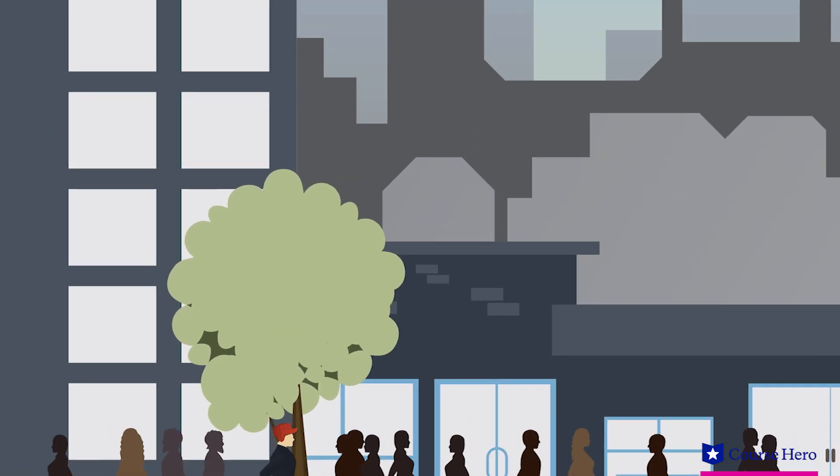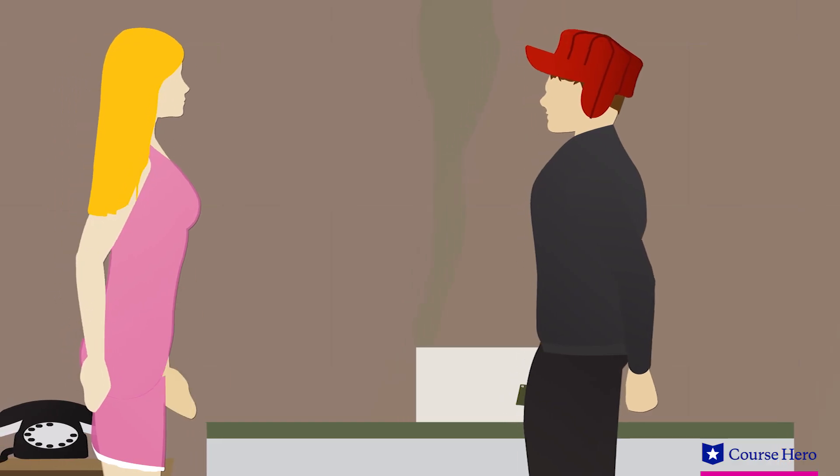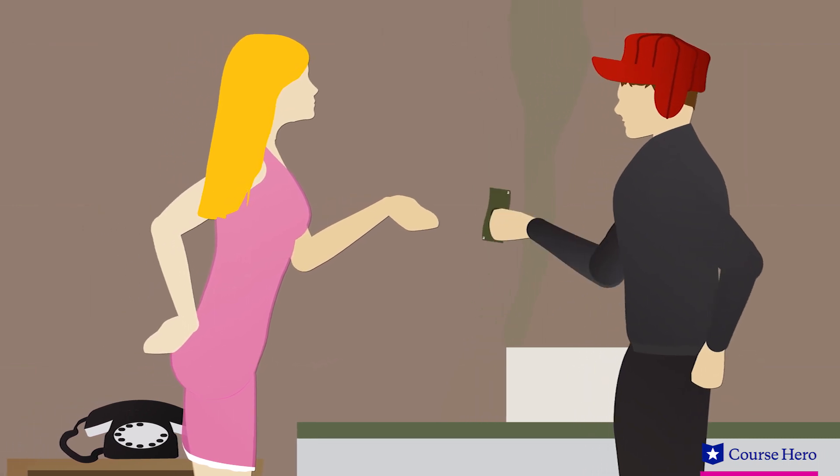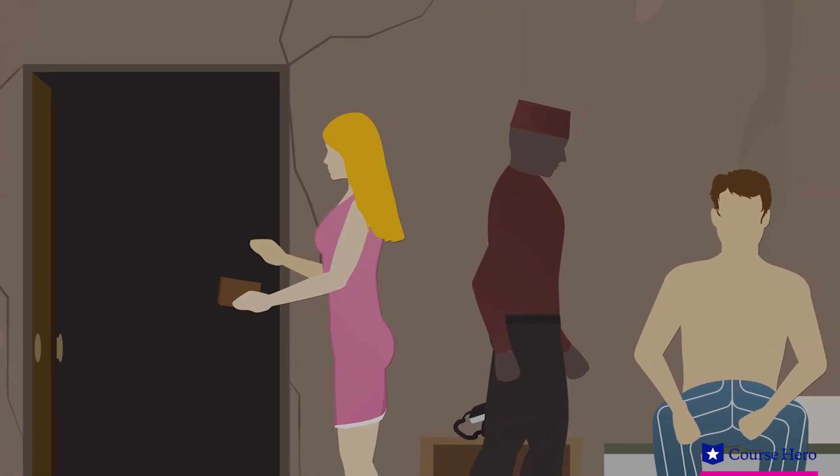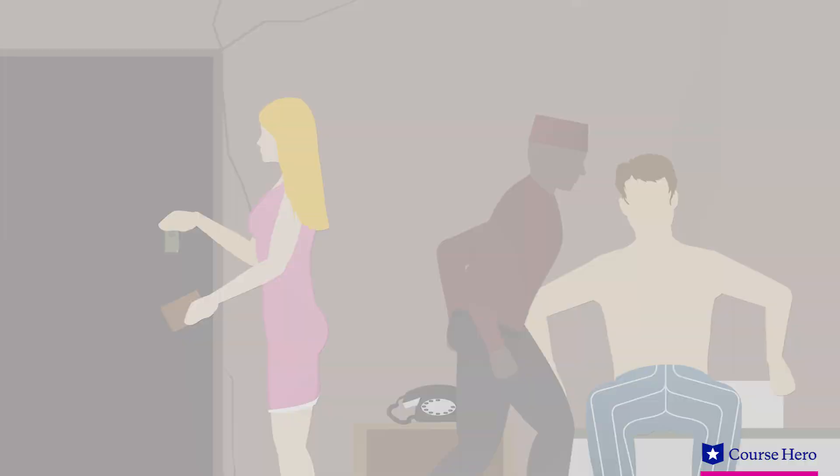He rents a hotel room. Holden pays a prostitute, Sunny, and then sends her away with only five dollars, but Sunny and her pimp shake Holden down for money.